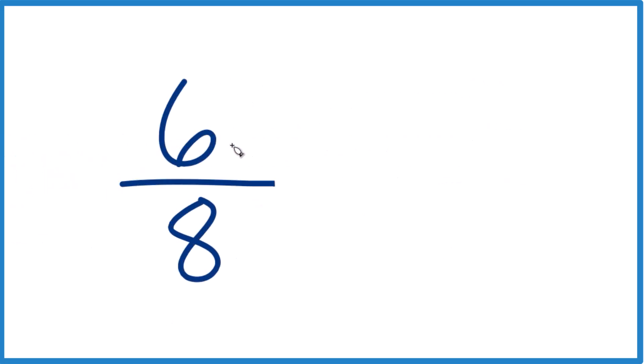So we need to find a factor that goes into both six and eight evenly, and we're looking for a whole number. But since they're both even, let's just divide both of them by two.